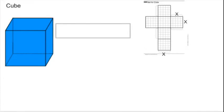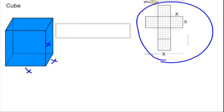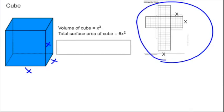First, let's talk about a cube. You'll notice over on the right there is a net of the cube with sides X. The volume of a cube can be defined as X times X times X, or X to the third. And the total surface area of the cube is 6X squared.